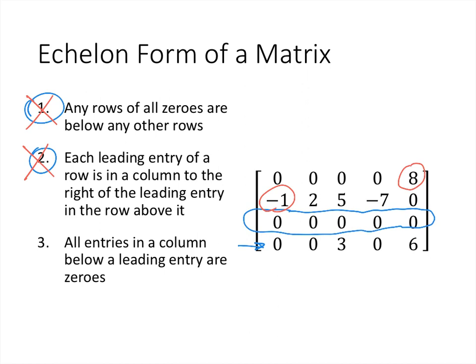We already know this matrix is not in echelon form, but let's check condition 3 for practice. All entries in a column below a leading entry must be zeros. That works for the first leading entry — everything below that negative 1 is zero. The leading entry in the fourth row has nothing below it, so that also satisfies the property. But it doesn't work for the last leading entry because there's something non-zero below it, so condition 3 is also not satisfied.